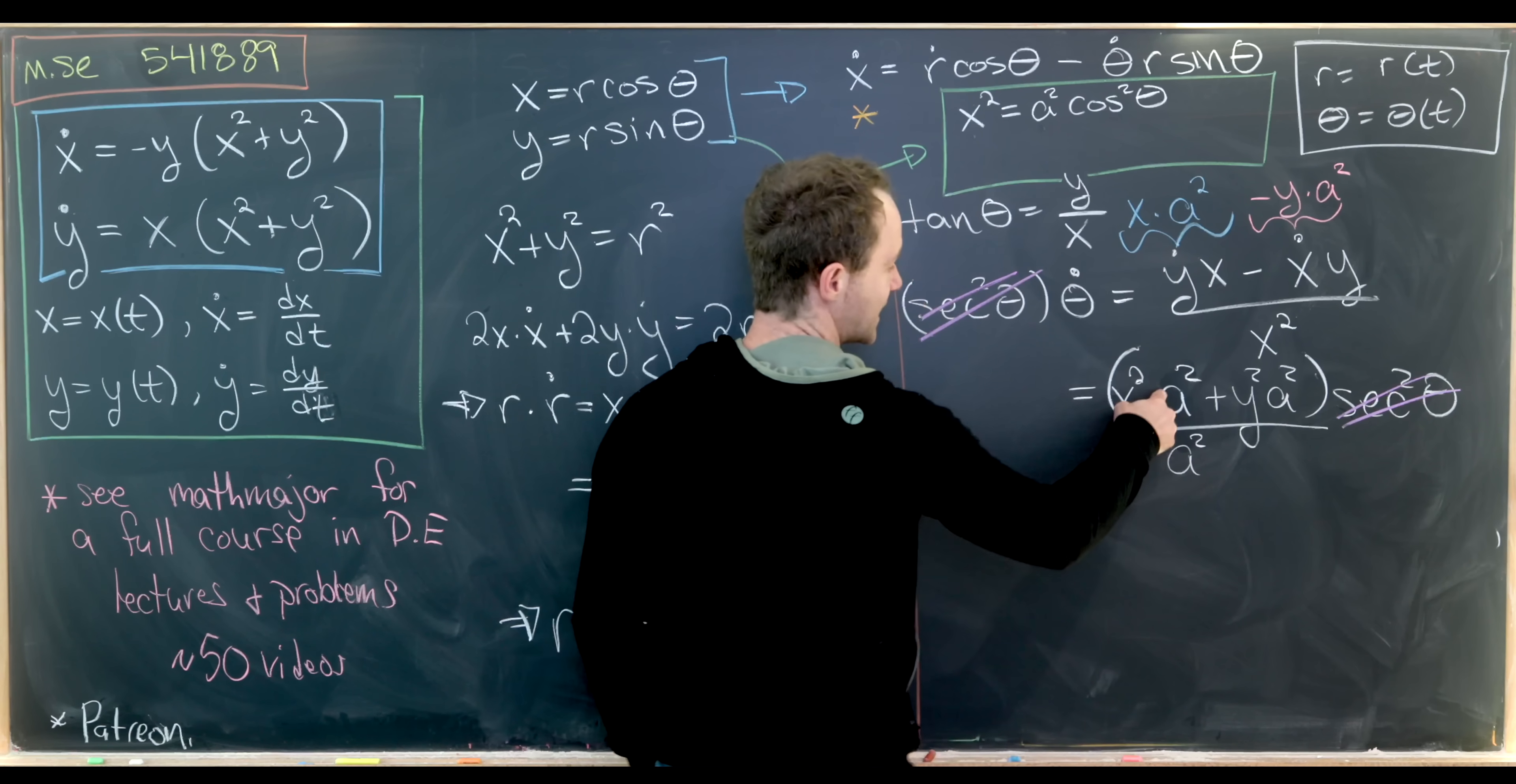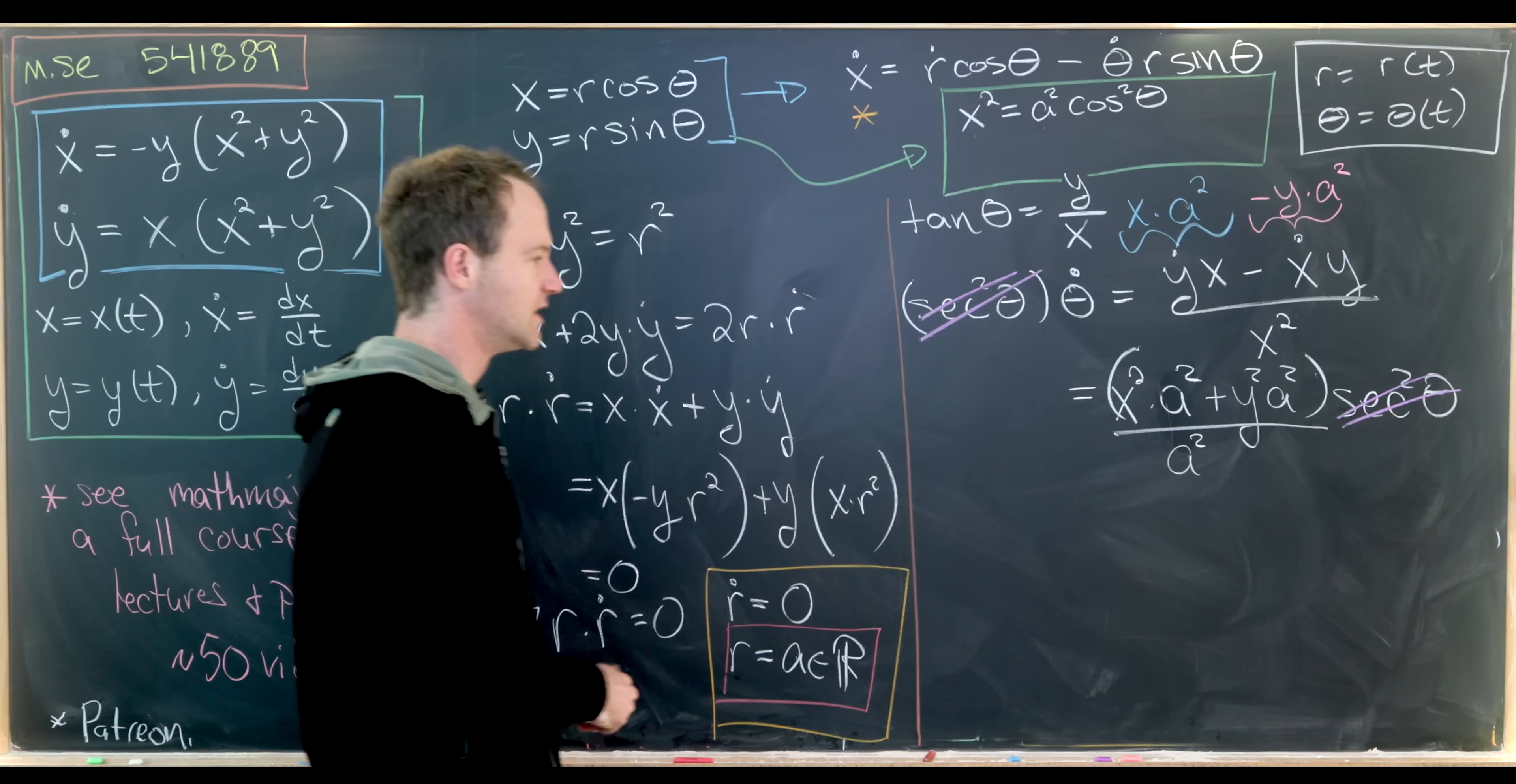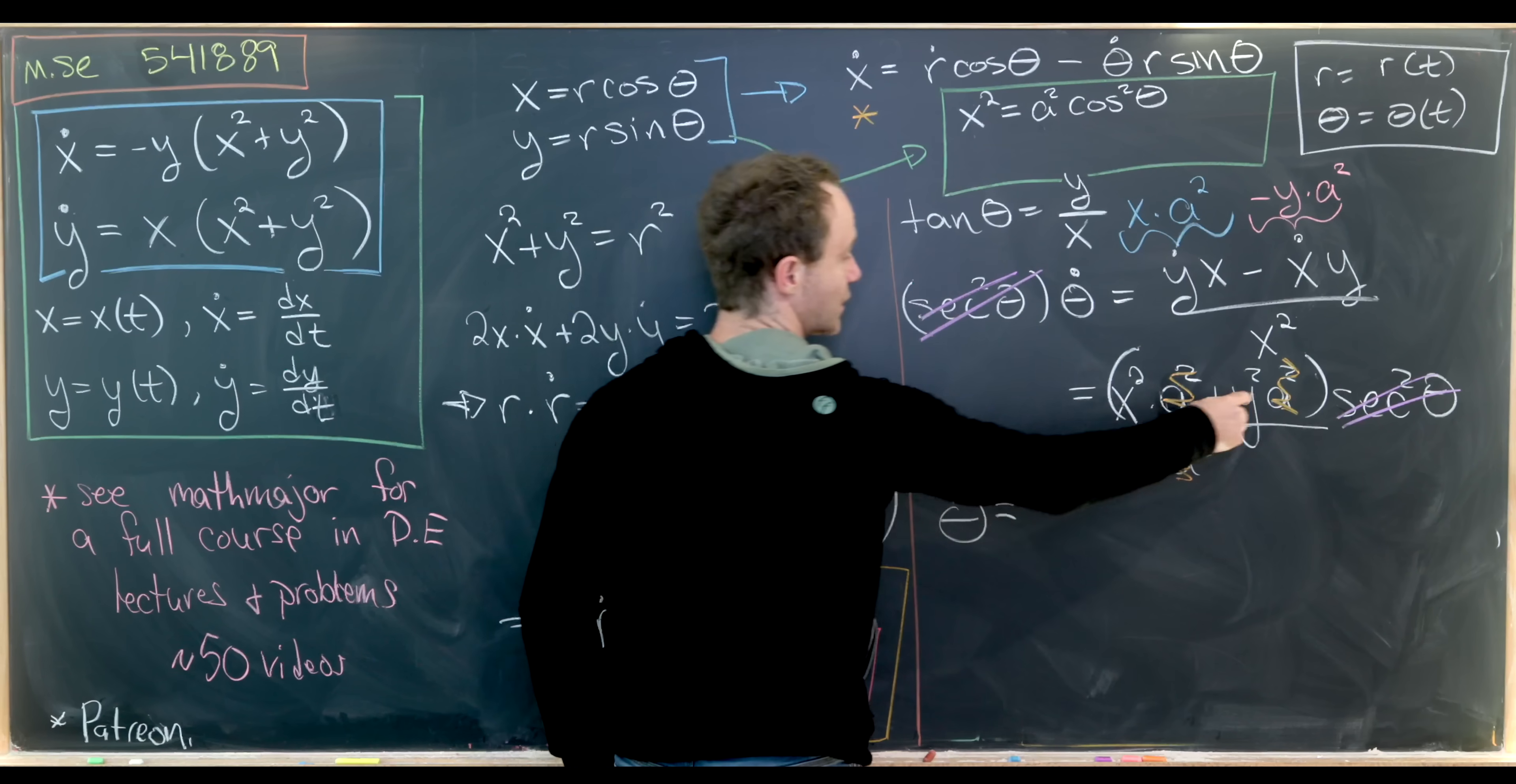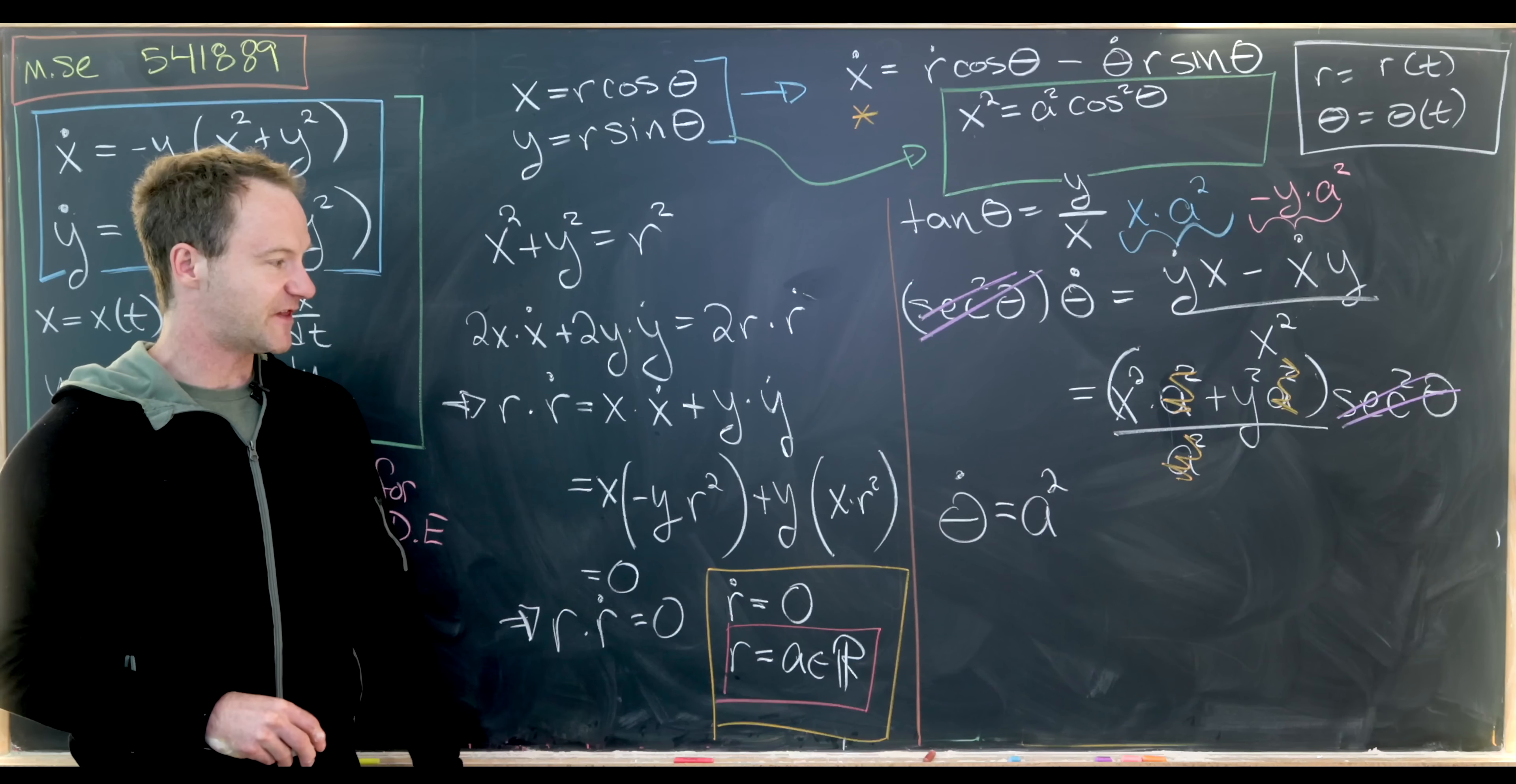And now we can cancel the secant squared θ from both sides. So that's cool. We can pull the a squared out of the numerator here and cancel with the denominator. So that's like doing something like this. A squared cancels this one and this one. And we're left with θ dot is equal to x squared plus y squared, which recall x squared plus y squared is the constant a squared.